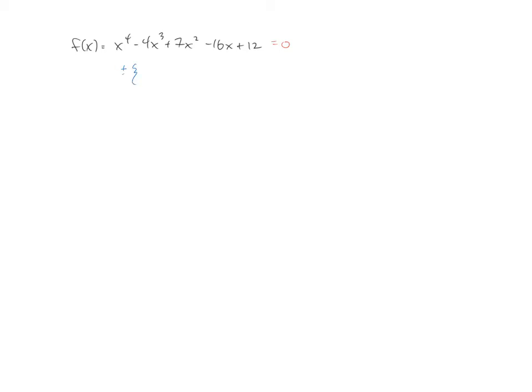Now, our p-value is 12. Our leading coefficient, our q, is 1. So the list of possible rational zeros would just be 1, 2, 3, 4, 6, and 12, plus or minus on those.